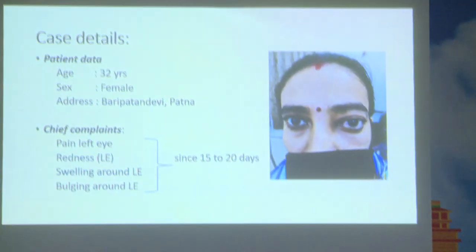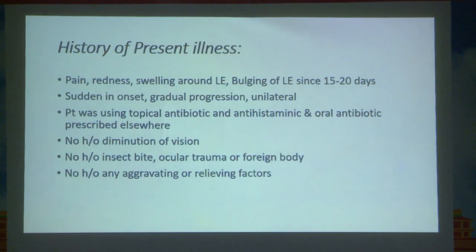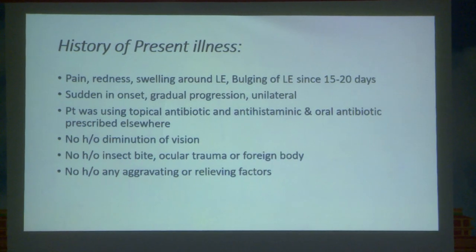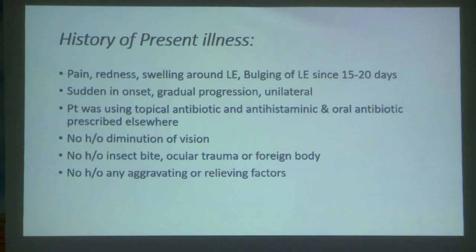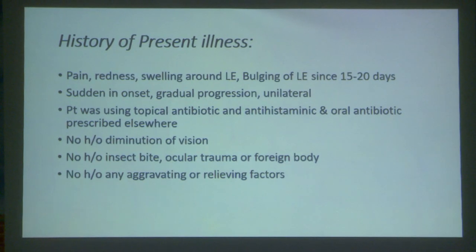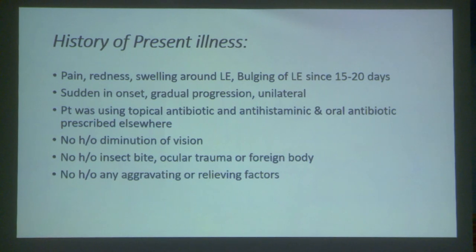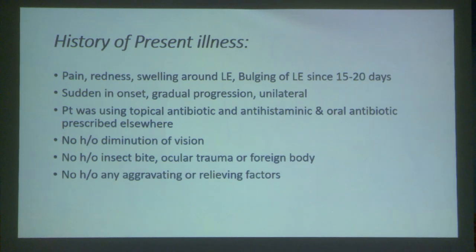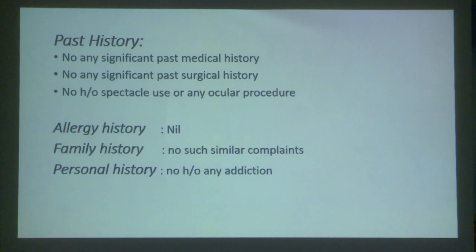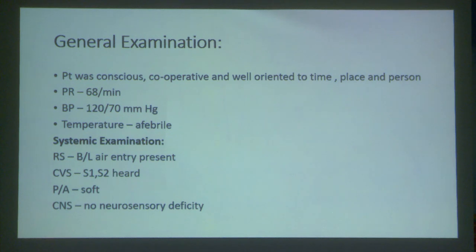The patient was asymptomatic 15 to 20 days ago, then developed pain, redness, swelling and bulging around the left eye which was sudden in onset with gradual progression and unilateral. She was using topical antibiotic, antihistaminic and oral antibiotic prescribed elsewhere. There was no history of diminution of vision, insect bite, ocular trauma or foreign body, no aggravating or relieving factors, and no significant past medical or surgical history.